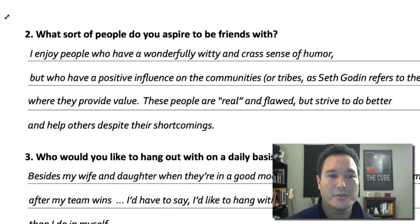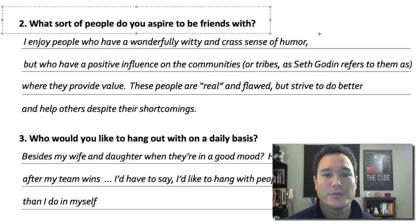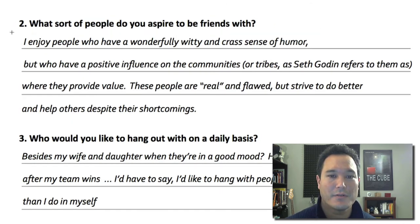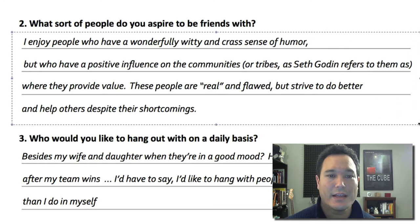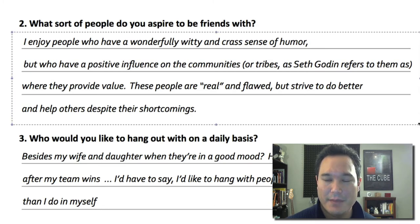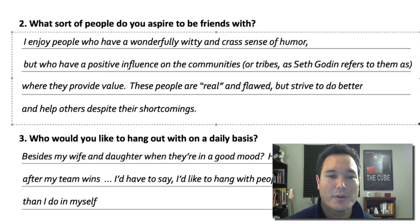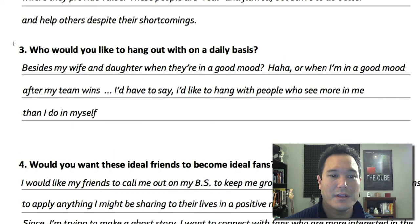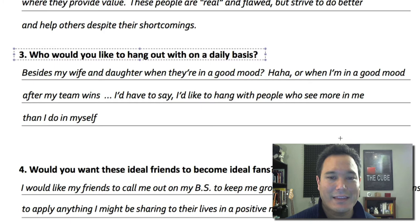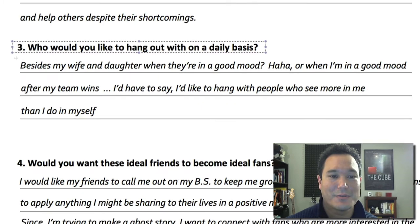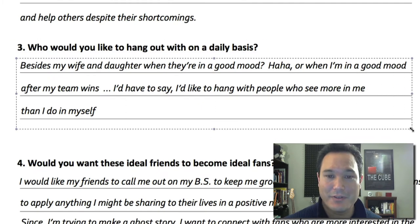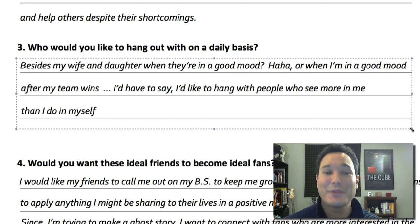Question number two: what sort of people do you aspire to be friends with? I wrote: I enjoy people who have a wonderfully witty and crass sense of humor, but who have a positive influence on the communities or tribes — as Seth Godin refers to them — where they provide value. These people are real and flawed but strive to do better and help others despite their shortcomings. Number three: who would you like to hang out with on a daily basis? Besides my wife and daughter, when they're in a good mood, I like to hang out with people who see more in me than I do in myself.